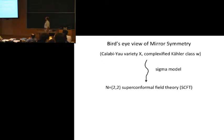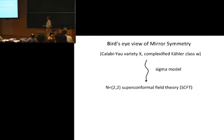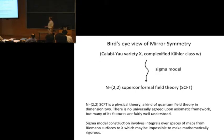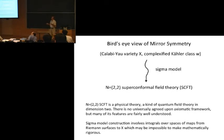It starts with a physical construction that associates to a Calabi-Yau X with a complexified Kähler class W, something called N equals 2,2 superconformal field theory. N equals 2,2 superconformal field theory is a quantum field theory in dimension two. It's not really completely clear what it is mathematically — there is no complete axiomatic definition of what the full N equals 2,2 is. So that's one issue.